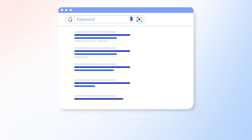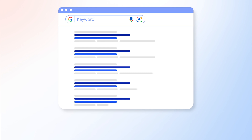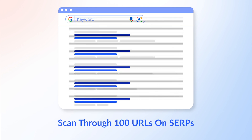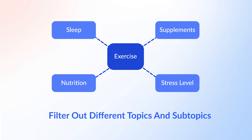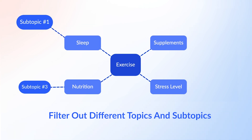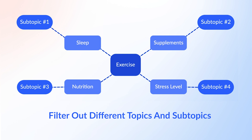Now let's talk about the mechanism behind the Topic Discovery Tool. When you enter your seed keyword, WriterZen searches the top 100 search results that Google returns for your keyword. It then scans through the entire content of all 100 competitors. WriterZen then filters out all of the headlines and subheadlines from those results in order to figure out how many competitors are covering certain topics and subtopics.